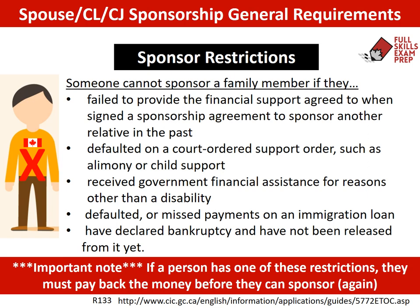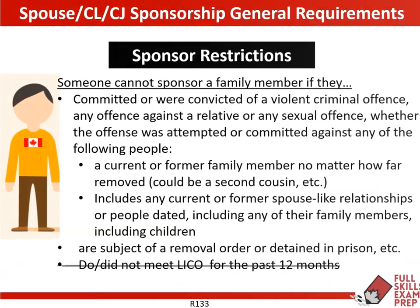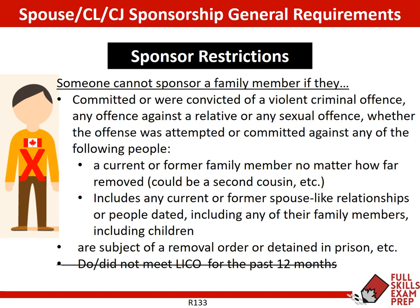A disability doesn't count in these restrictions. Just as before, if a person has one of these financial restrictions, what they can do is simply pay that money back and then they would be eligible to be a sponsor. If a person committed any type of violent crime or sexual crime against a family member — past or present, no matter how far removed — they would be ineligible to be a sponsor as well, unless they apply for rehabilitation. If the person is subject to a removal order or is in prison, same thing — they can't sponsor a spouse. The LICO doesn't have to be met, as we saw before.